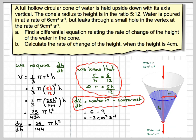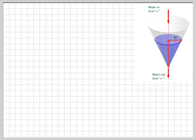So now we have all the information that we want. We know we want to find dh/dt. We've got dV/dh = 25/144 π h², and we've now got dV/dt = -3 cm³/s.